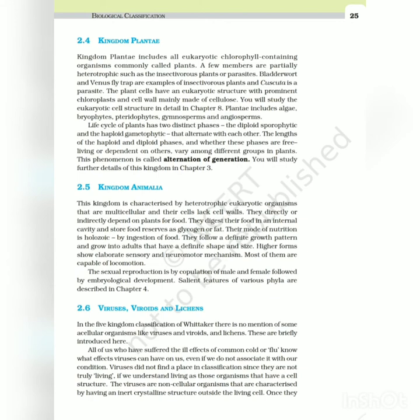Kingdom Plantae includes all eukaryotic chlorophyll-containing organisms commonly called plants. A few members are partially heterotrophic such as the insectivorous plants or parasites. Bladderwort and Venus flytrap are examples of insectivorous plants, and Cuscuta is a parasite. The plant cells have an eukaryotic structure with prominent chloroplasts and cell wall mainly made of cellulose. Plantae includes algae, bryophytes, pteridophytes, gymnosperms and angiosperms. Life cycle of plants has two distinct phases - the diploid sporophytic and the haploid gametophytic - that alternate with each other. The lengths of the haploid and diploid phases, and whether these phases are free-living or dependent on others, vary among different groups in plants. This phenomenon is called alternation of generations. You will study further details of this kingdom in chapter 3.